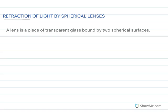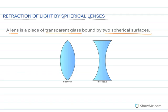Refraction of light by spherical lenses. First, we see what a lens is. A lens is a piece of transparent glass bounded by two spherical surfaces. In this lesson we will deal with two kinds of lenses: the first is the convex lens, and the second is the concave lens.